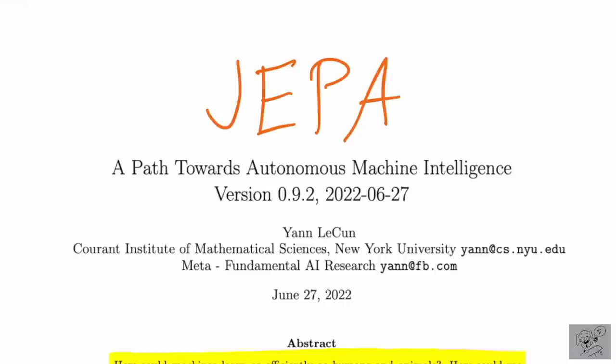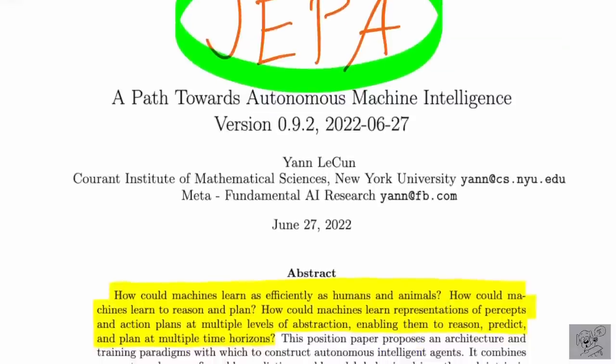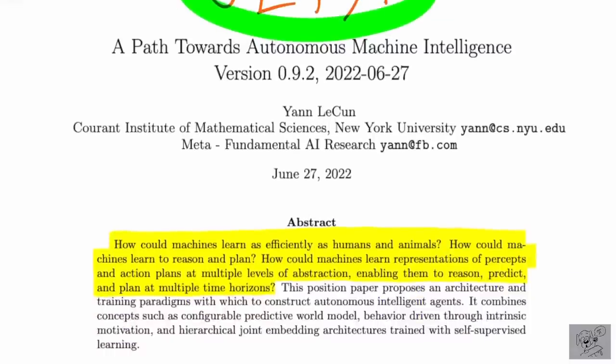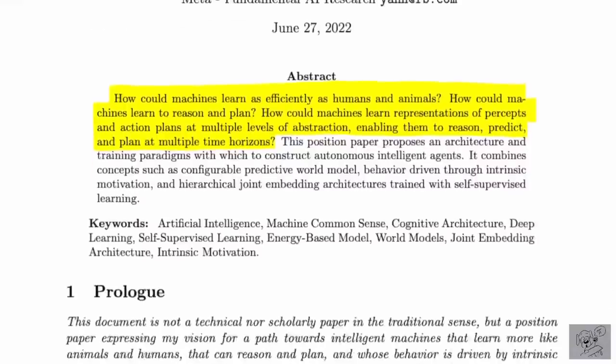Hello there. Today we're looking at 'A Path Towards Autonomous Machine Intelligence' by Yann LeCun, also called the JEPA paper. JEPA is a new architecture that Yann LeCun proposes as a part of this paper, and we're going to go into it as he himself describes it as the cornerpiece of this method. You will learn what one of the Godfathers and Turing Award winners thinks of how we should reach machine intelligence, or at least one proposal of it.